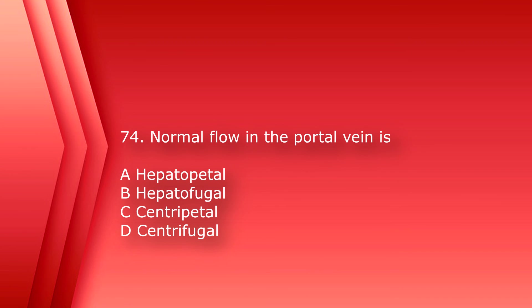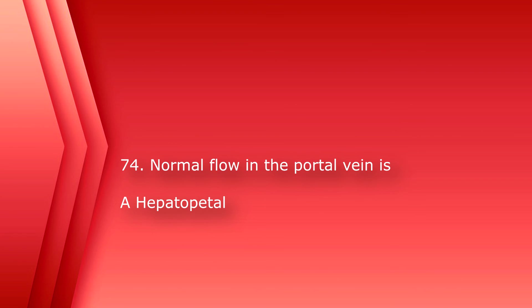Number 74: Normal flow in the portal vein is: A) hepatopetal, B) hepatofugal, C) centripetal, or D) centrifugal. The answer is A, hepatopetal — towards the liver. Remember, hepatofugal means away from the liver; just think of 'fugal' like fugitive, running away.